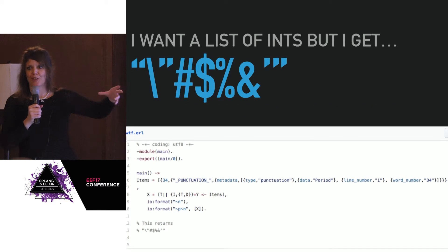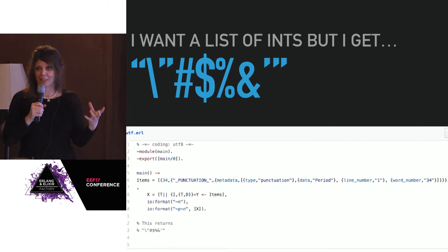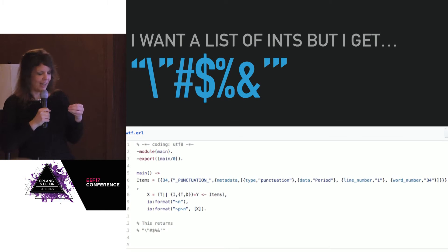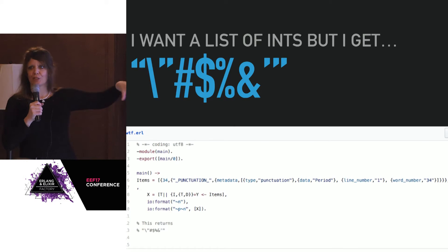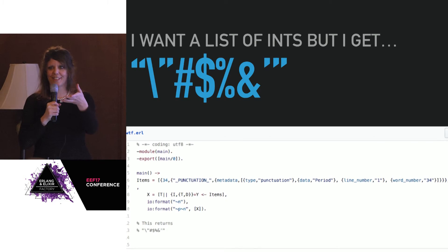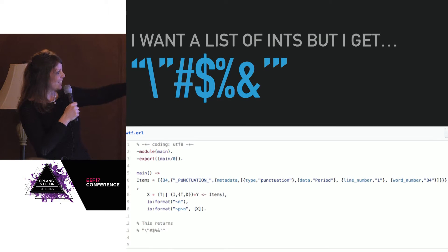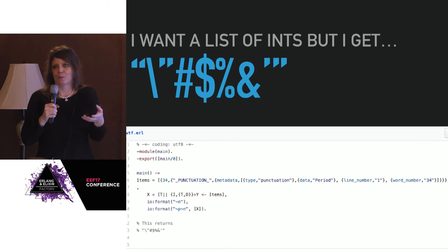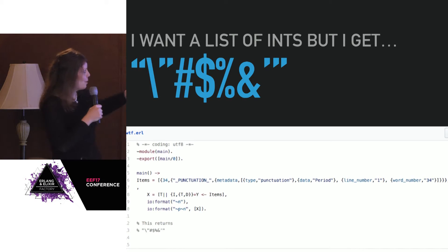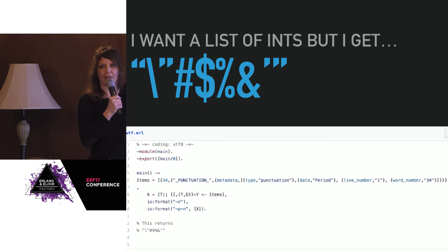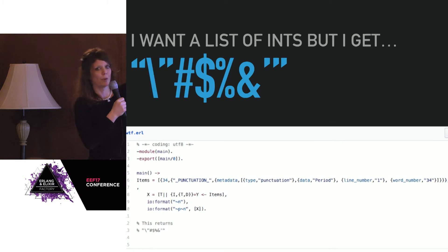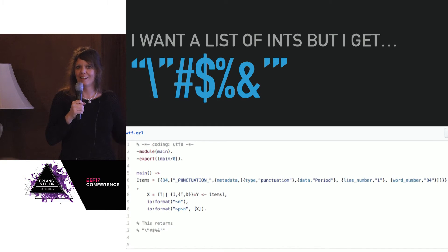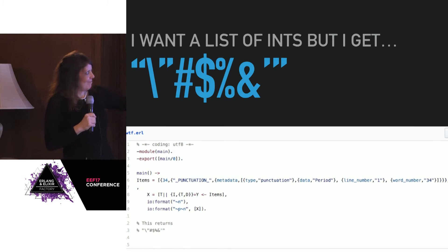I wanted to show one quick example of an expectation of mine that was breached, which has to do with string processing in Erlang. I was iterating over a data structure and trying to come up with a very simple list of integers — just a list that said 34, 35, 36, 37. I thought this was very simple. I ran my code and got back a string of backslash-quote, hash, dollar, percent, ampersand, single-quote. It wasn't even a list.